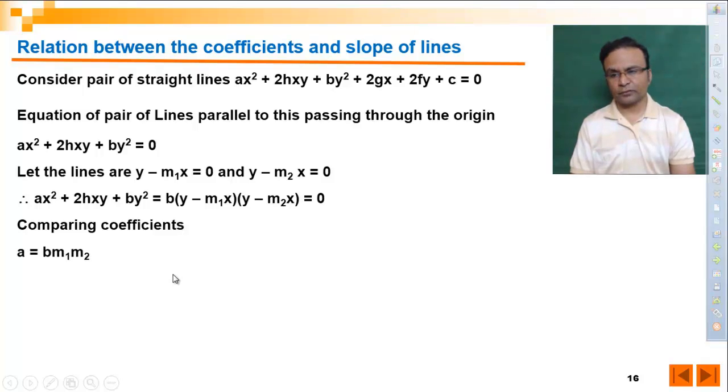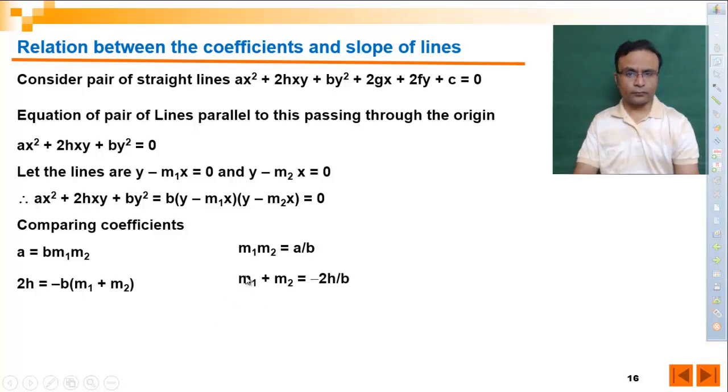First let's compare coefficient of x square. It is a from here and m1m2 times b from here. Then compare coefficient of xy, that is 2h equals minus b bracket m1 plus m2.